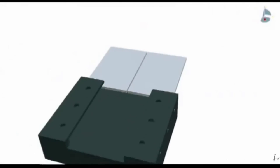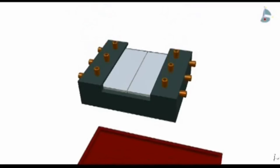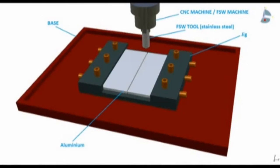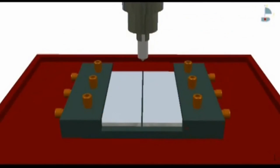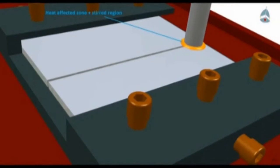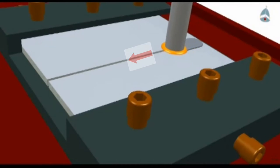In FSW, the two metal pieces which are to be joined are kept close to each other and clamped on a machine bed. After clamping, the machine tool which is rotating is inserted at the joining area. The rotating tool is then pressed against the joining line and then moved forward along the line as shown.